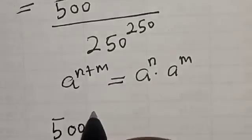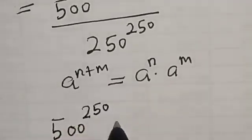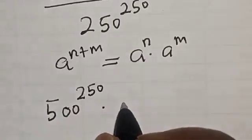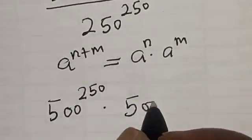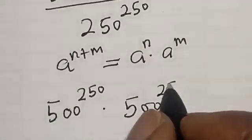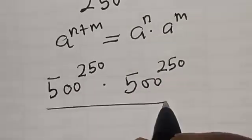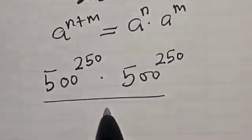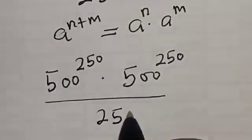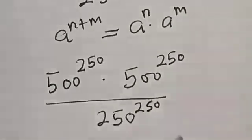Then we have 500 raised to power 250 multiplied by 500 raised to power 250, divided by 250 raised to power 250.